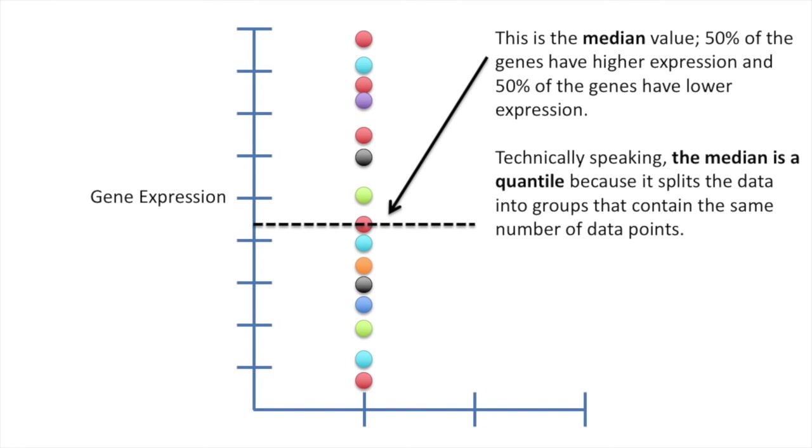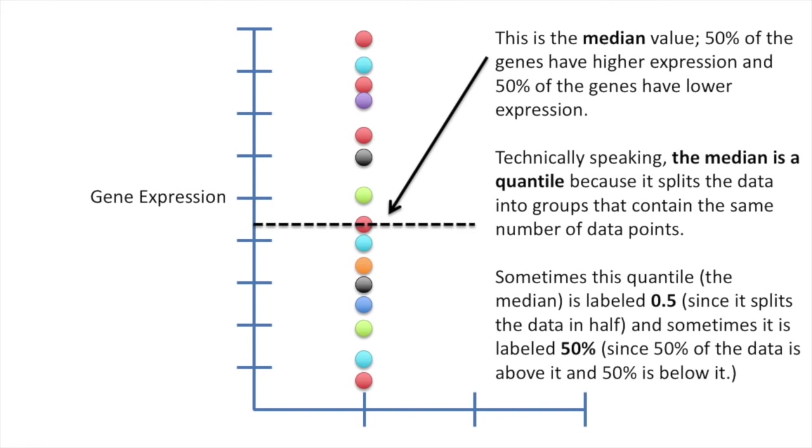Technically speaking, the median is a quantile because it splits the data into groups that contain the same number of data points. In this example, there are seven data points below the line and seven data points above the line. Sometimes this quantile, the median, is labeled 0.5 since it splits the data in half, and sometimes it's labeled 50% since 50% of the data is above it and 50% is below it.